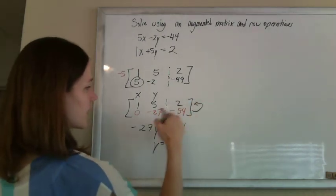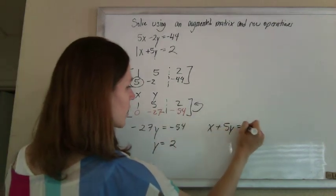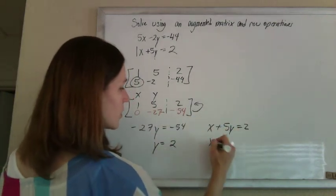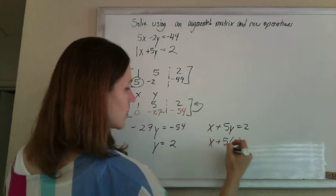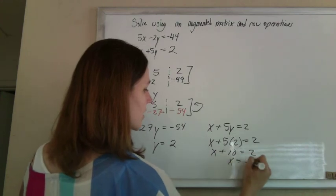Hop back up to this equation. This is x plus 5y equals 2. And we know y is 2, so plug that in. So x plus 5 times 2 is 2, so x plus 10 is 2, so x is negative 8.